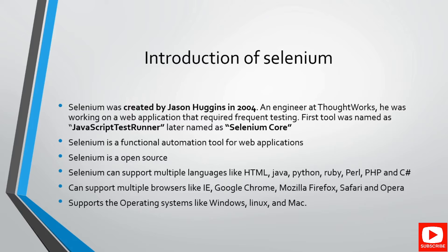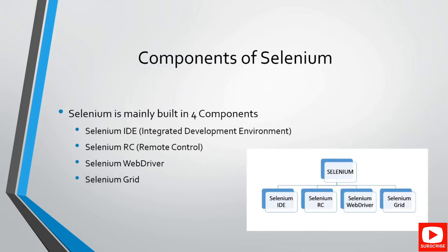Selenium can support multiple languages, which created a big boom in the market. Selenium supports Java, Python, Ruby, Pearl, C#, and more. It can also support multiple browsers like Internet Explorer, Google Chrome, Mozilla Firefox, Safari, and Opera, and multiple operating systems like Windows, Linux, and Mac. The components of Selenium are mainly built on four components: Selenium IDE, Selenium RC (Remote Control), Selenium WebDriver, and Selenium Grid.